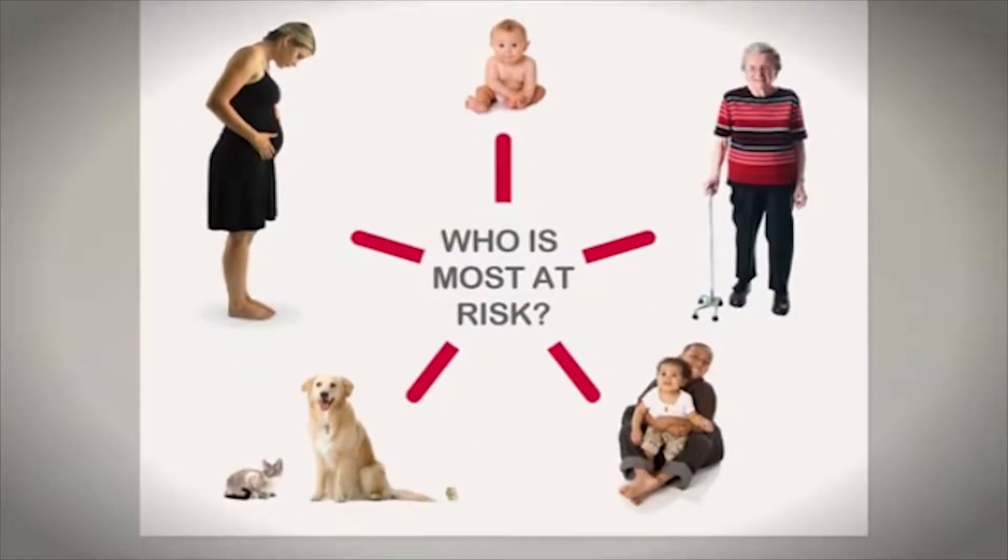It's important to remember that some members of your household may be affected by CO poisoning more quickly than others. For example, people with heart or breathing problems, babies and small children, pregnant women, and pets may be the first to show signs of CO poisoning.